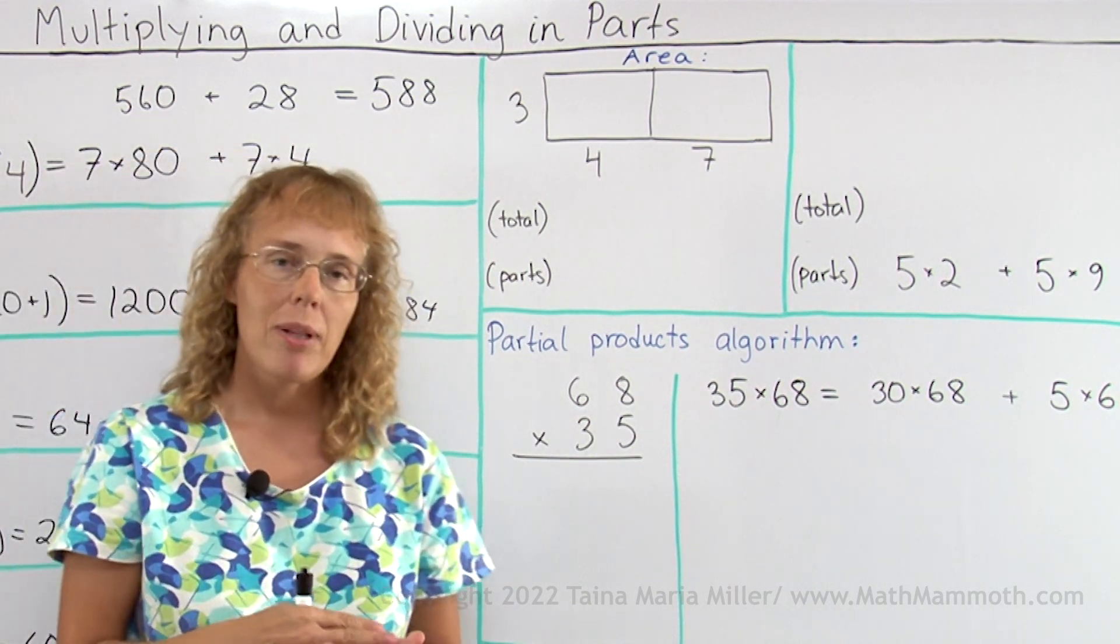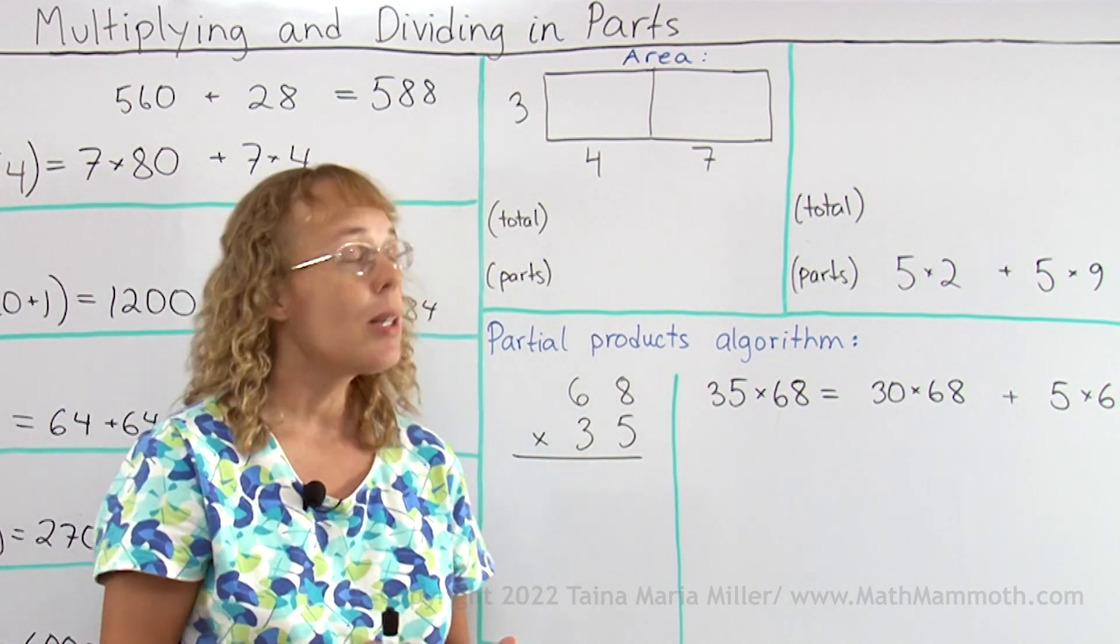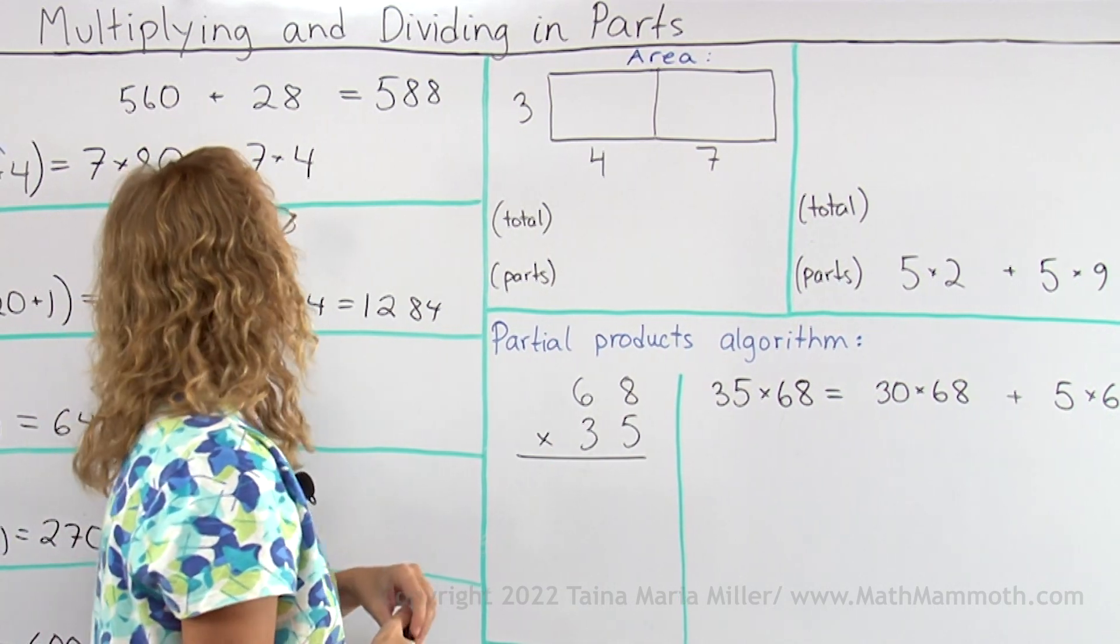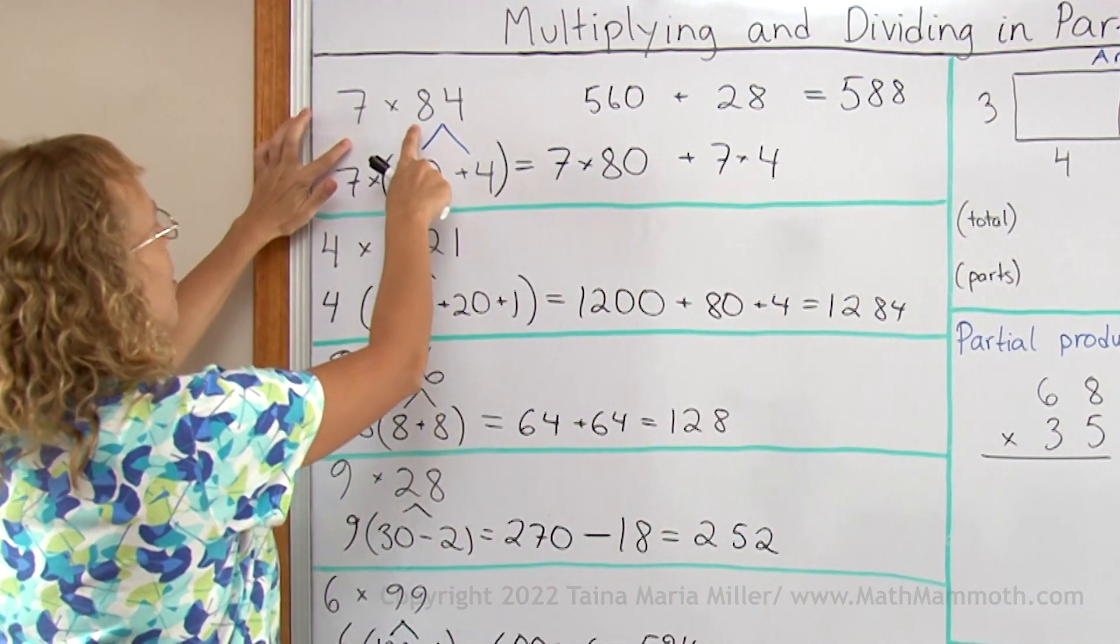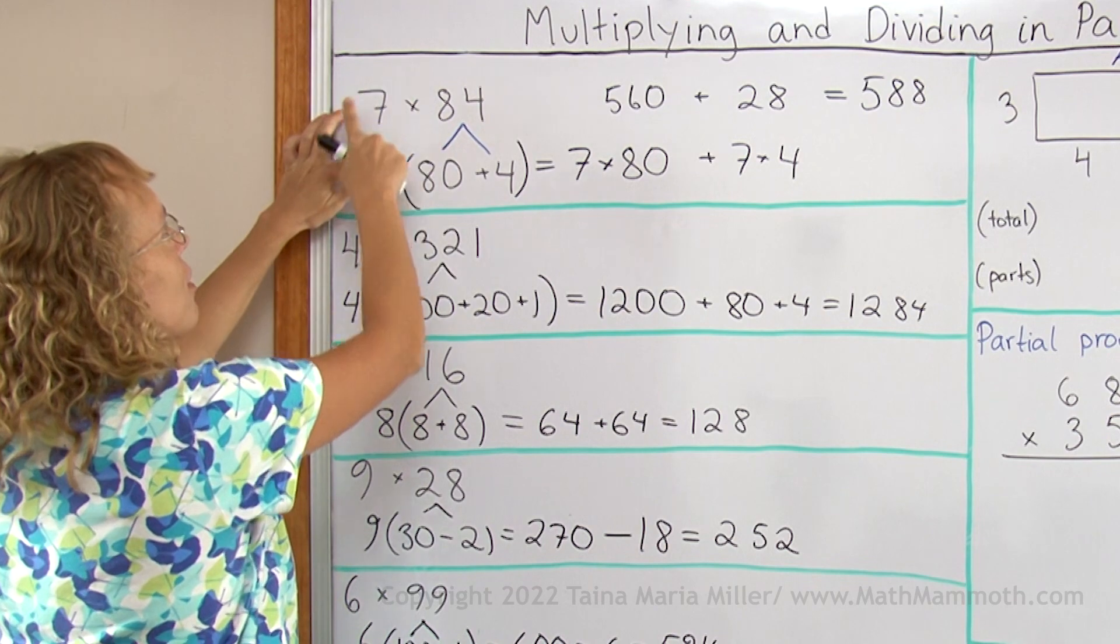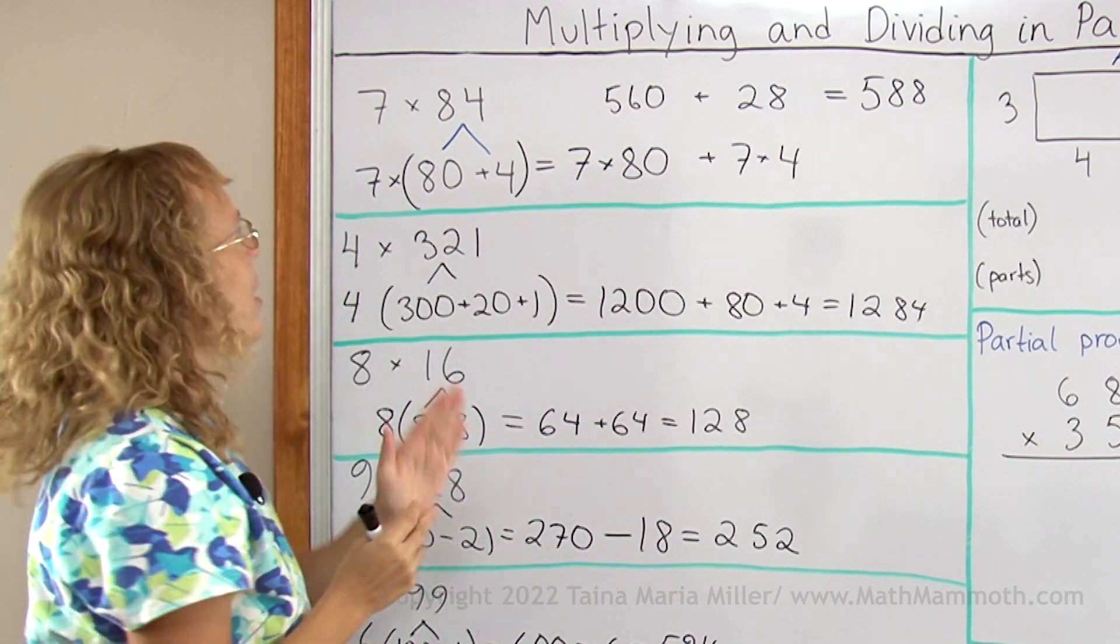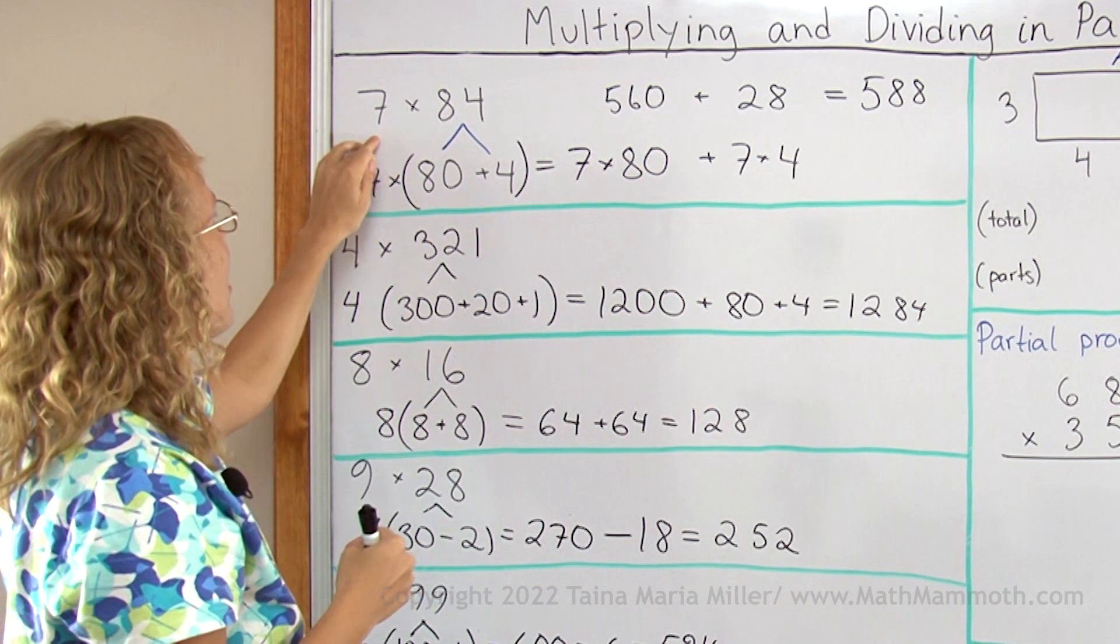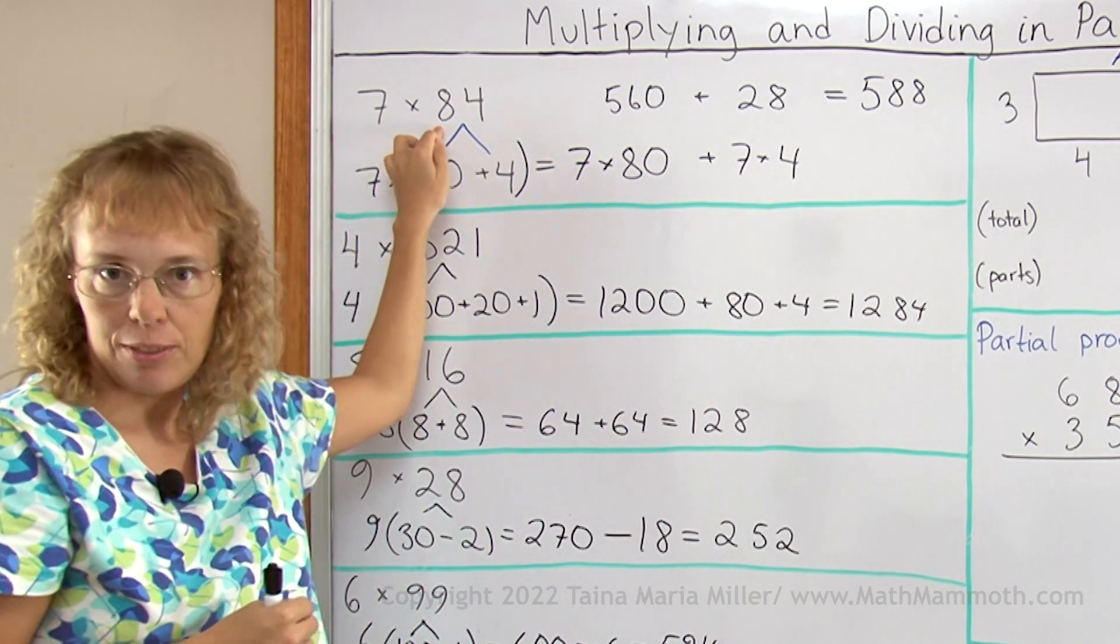Now let's go on because multiplying in parts ties in with area rectangles very closely. You see, whenever you have a multiplication you can think of a rectangle, right? This would be how you would calculate the area of a rectangle that has one side 7, the other side 84.